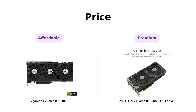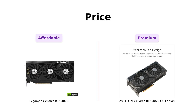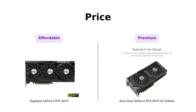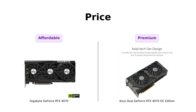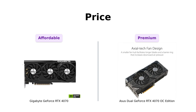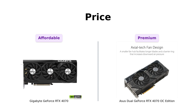Let's start with the price. The Gigabyte GeForce RTX 4070 is priced at $549, while the Asus Dual GeForce RTX 4070 OC Edition comes in at $609. The Asus variant is slightly more expensive. However, keep in mind that prices may vary depending on your location and availability.